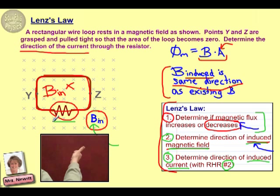So our resistor's down here, that means our two options are, we either have current flowing to the left or current flowing to the right. And so what we'll do is we'll check those both with right hand rule number two and see which one allows us to produce the correct induced magnetic field.